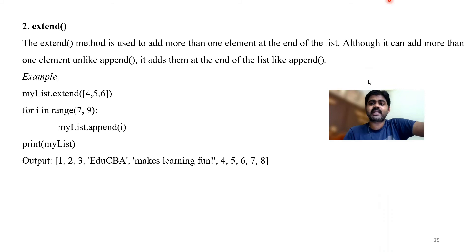Next is reverse. The reverse operation reverses the elements of the list and modifies the original list. For reversal without modifying the original, we use slice with negative indices: my_list[:: -1]. Using my_list.reverse() modifies the original list. You can see the list is reversed: 3, 3, 3, 3, 3, 5, 4, 3, 2, 1. The slice approach does not modify the original, whereas the reverse method does.